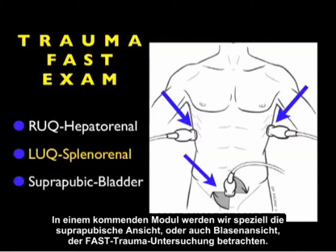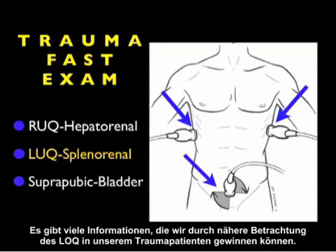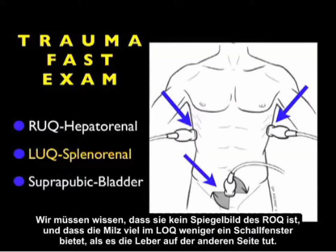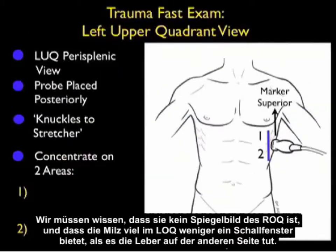In an upcoming module we'll look specifically at the suprapubic or bladder view of the trauma FAST exam. There's a lot of information we can gain by looking at the left upper quadrant in our trauma patients, and we'll need to know that it's not a mirror image of the right upper quadrant — the spleen offers less of an acoustic window onto the left upper quadrant than the liver does on the other side.